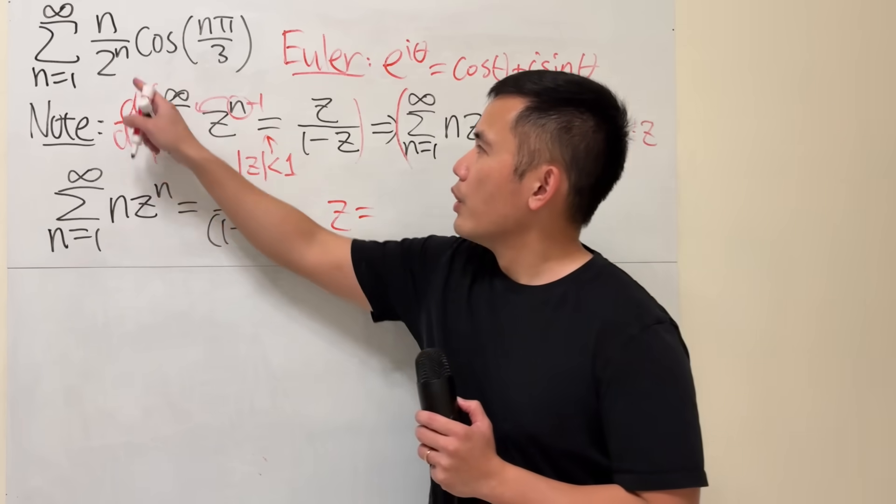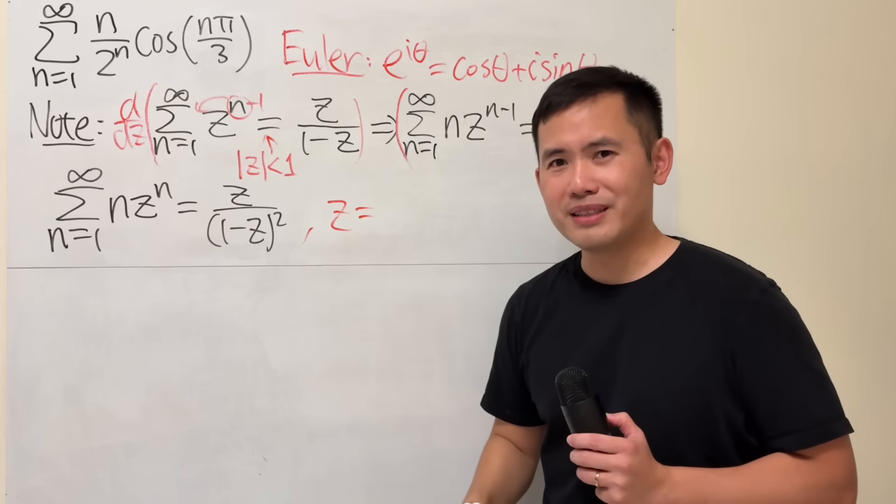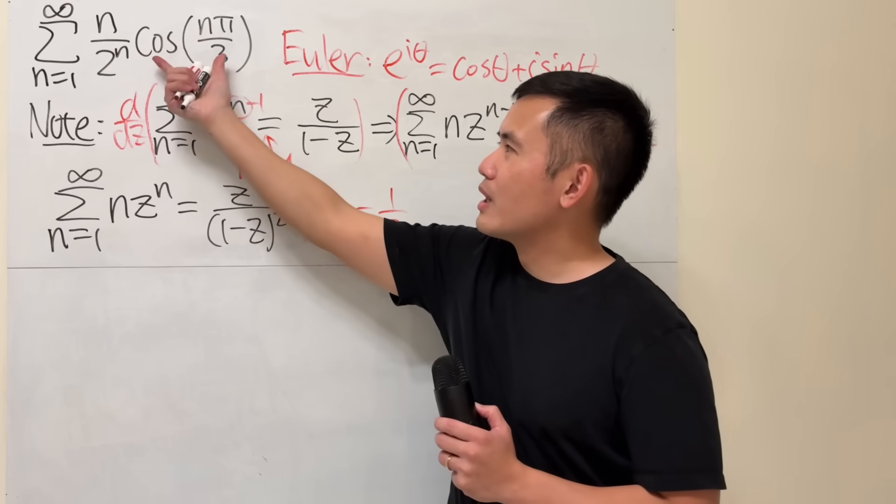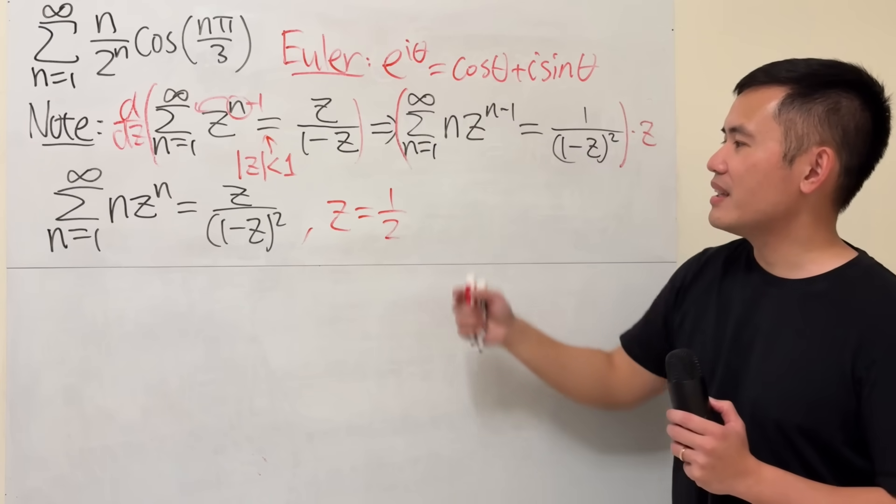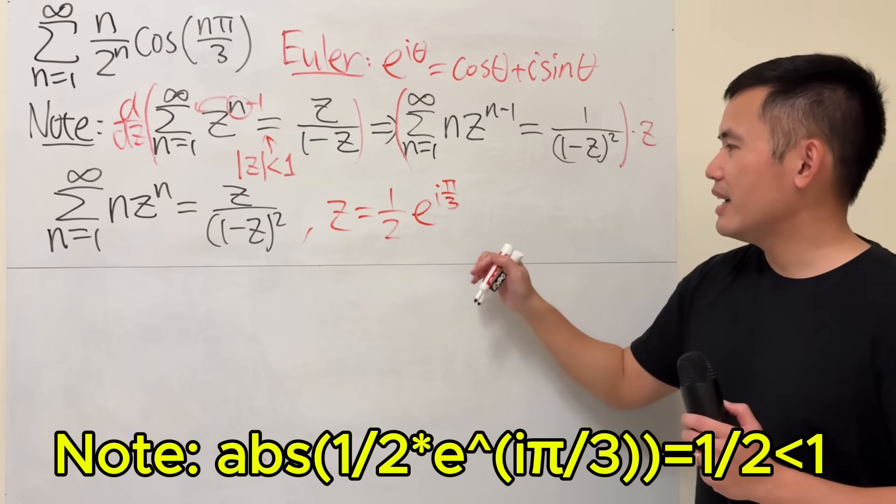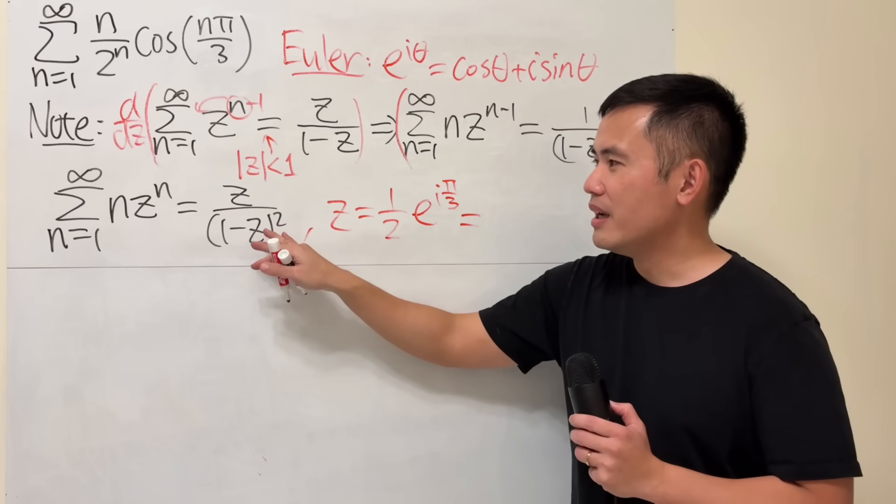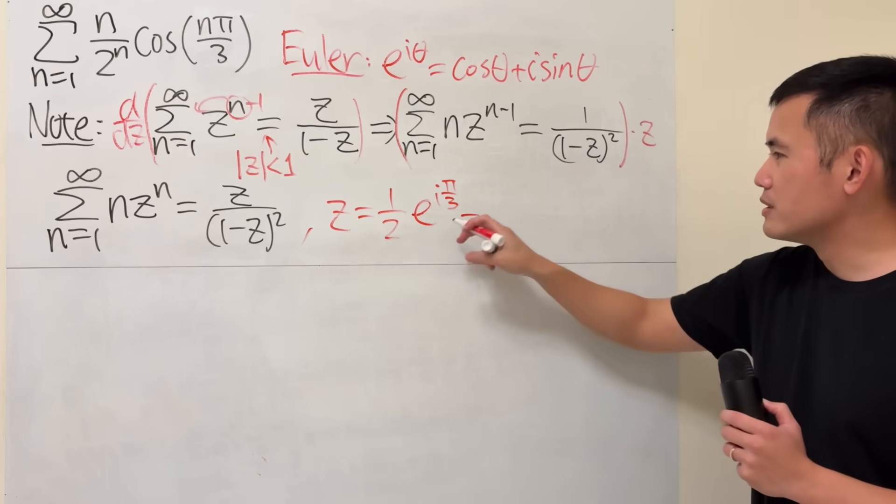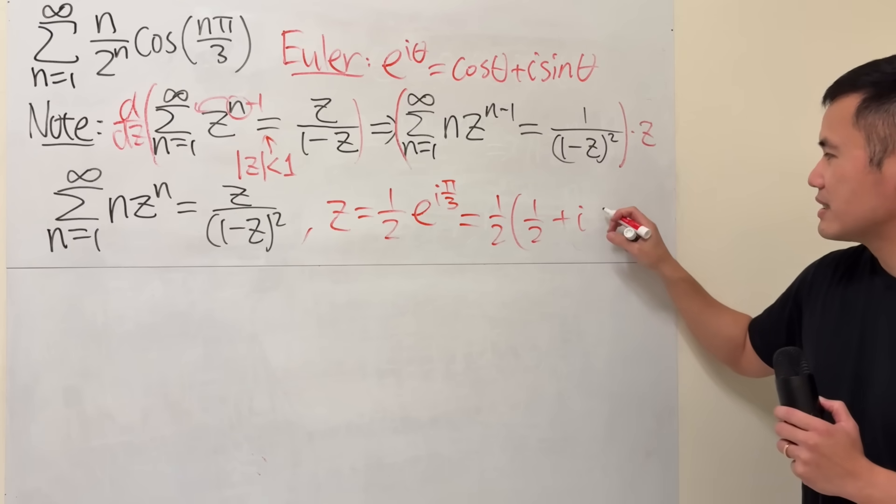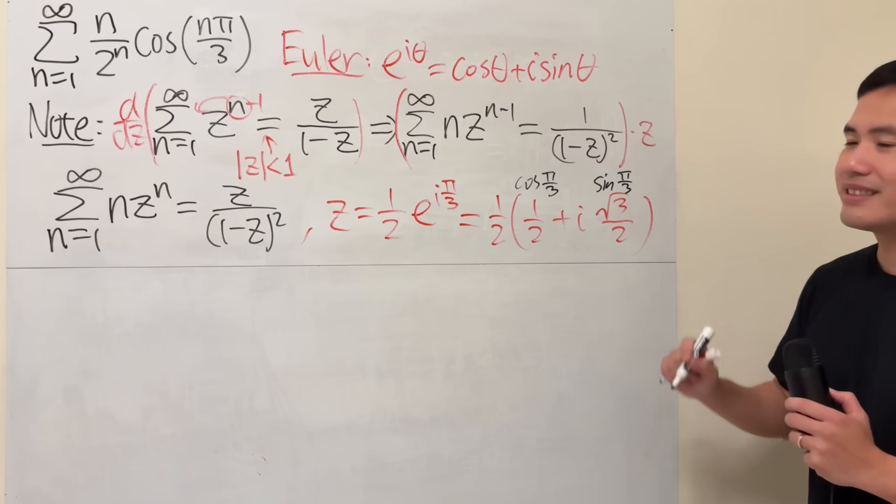So what z are we going to plug in? We have the n right here already, and this has 2 to the n on the bottom. z should have a 2 on the bottom, so let's start with 1 half. And then we have this cosine with the n and pi over 3. Cosine is the real part of e to the i theta. So I will put e to the i with theta being pi over 3. I will write this in standard form: 1 half cosine of pi over 3, which is 1 half, plus i sine of pi over 3, which is square root of 3 over 2.